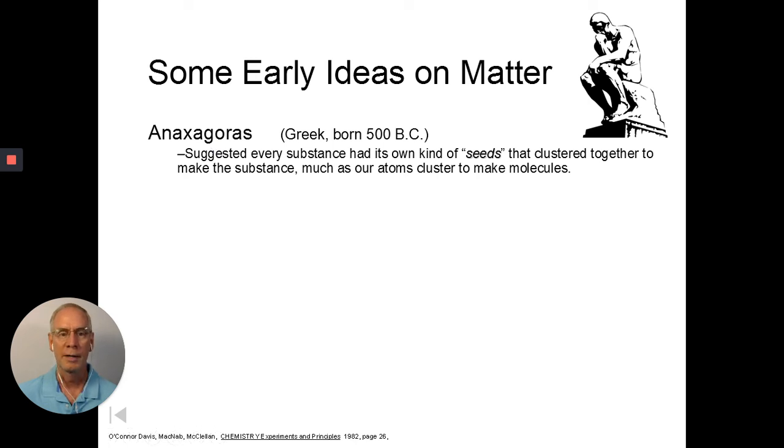All right, I'm sure I slaughtered his name. Now, he was Greek and he was born about 2,500 years ago. And his idea was that every substance had its own kind of seeds that clustered together to make substances. Kind of like atoms grouped together to make compounds and molecules and you and I. Now, I like the simplicity of this because I'm a gardener.